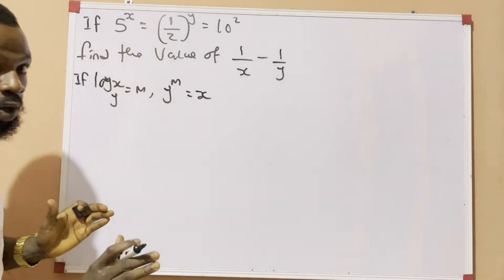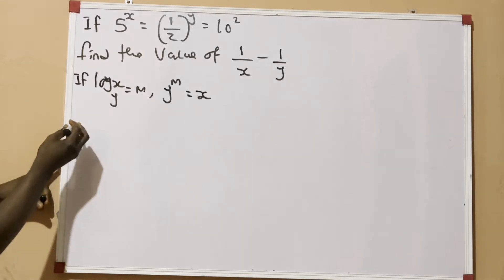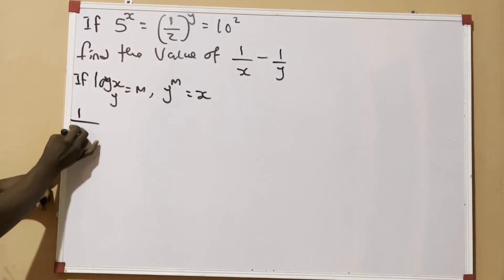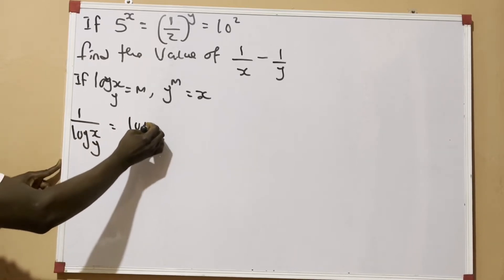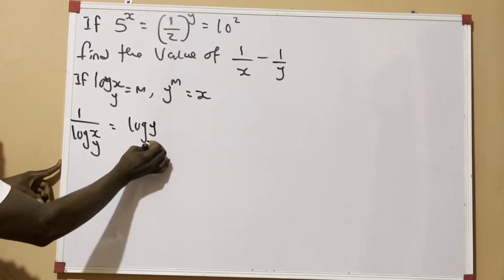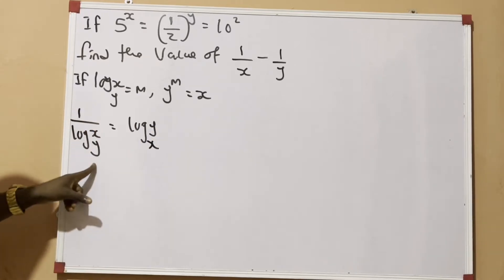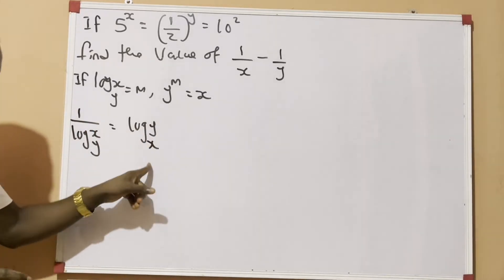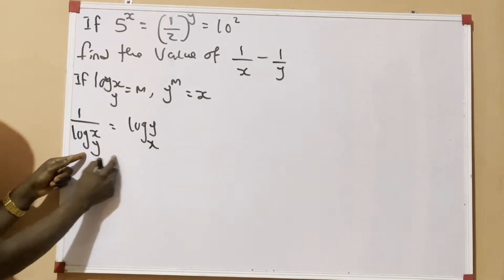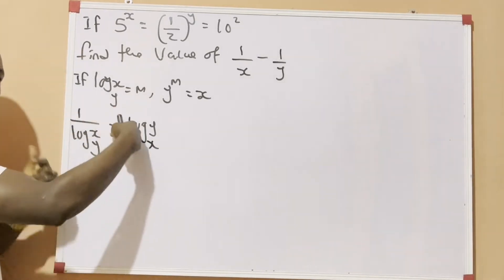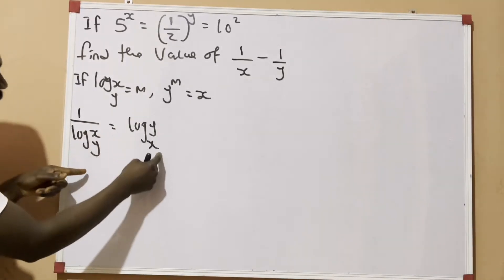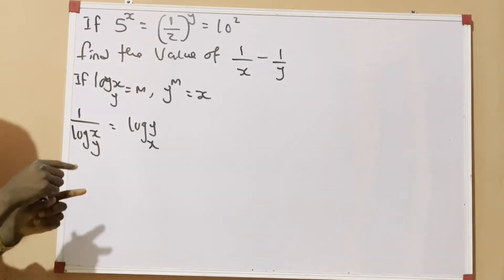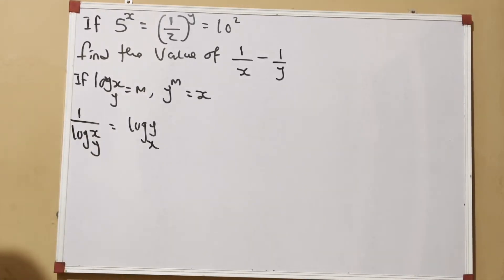The second rule says: 1 over log x base y is the same thing as log y base x. Notice that the base was y, but now the base is x — they are switched. So log y base x is the inverse of log x base y. With these two rules, we are going to solve this question.